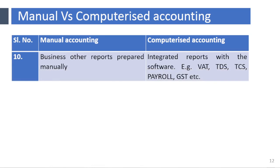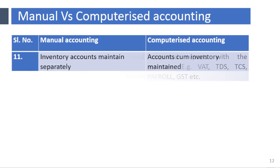Business and other required reports need to be prepared manually in manual accounting. In computerized accounting, integrated reports within the software are available, such as VAT, TEETS, KCS, Payroll, GST, MIS, inventory, and other statutory reports. Inventory accounts need to be maintained separately in manual accounting, whereas accounts and inventory can be maintained simultaneously in computerized accounting.